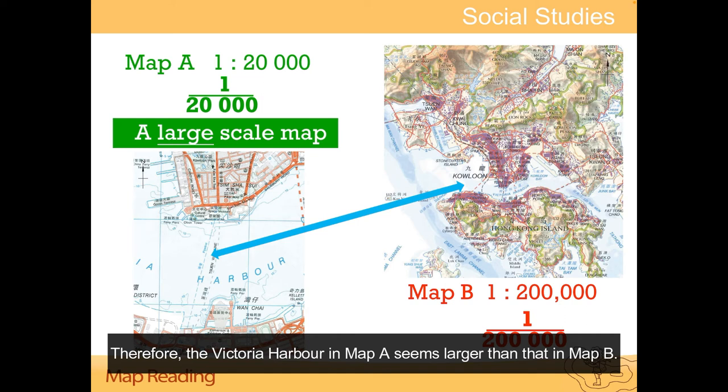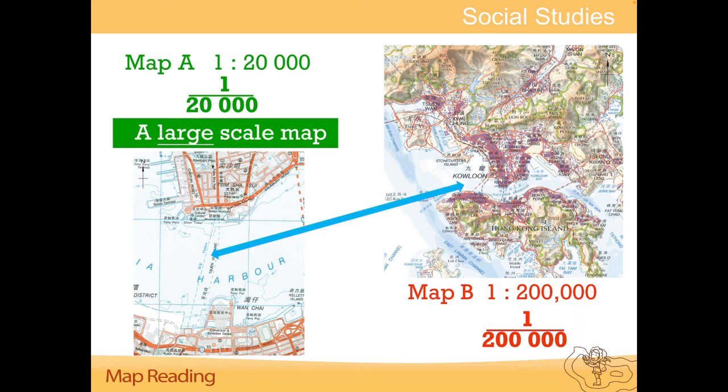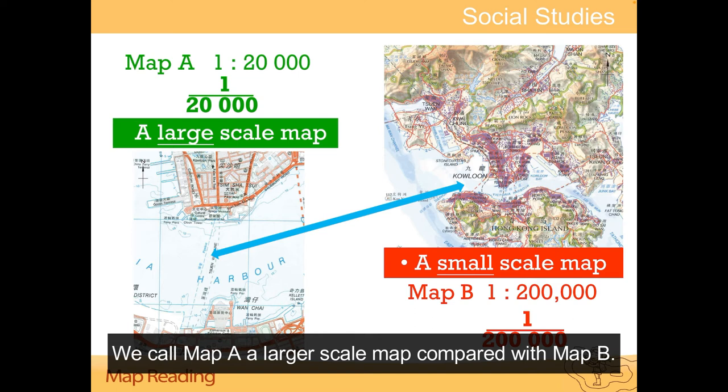Therefore, the Victoria Harbour in Map A seems larger than that in Map B. We call Map A a larger scale map compared with Map B.